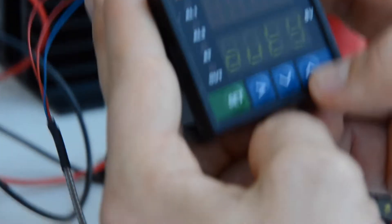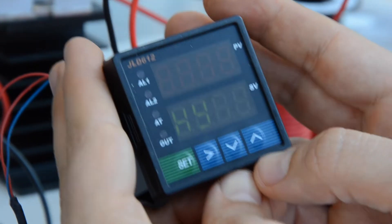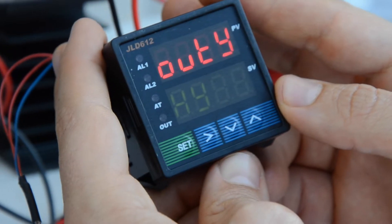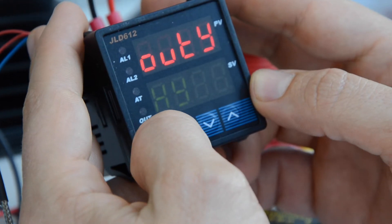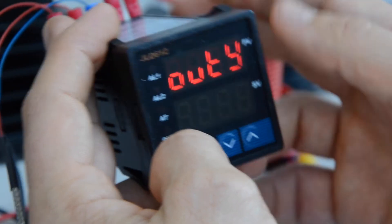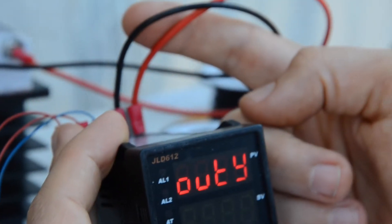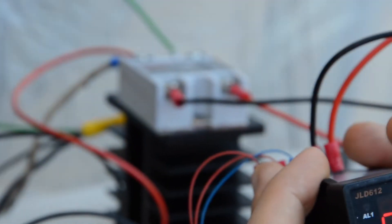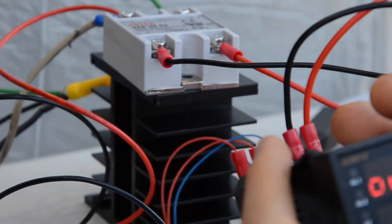So we'll set that one and we'll scroll up to O-U-T-Y. This is the relay method that we're using and it has three settings. The one that we want, 0, 1, and 2, we want 2 which is what uses the solid state relay. The other two are a different setting that doesn't work for our system.